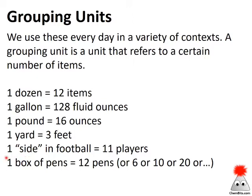We can extend it to other things. A side in football is 11 players — we don't talk about 11 players, we talk about the side in a football match. Or we can have a box of pens, and that's 12 pens. This is actually a good example because it points out that not all grouping units are as rigidly defined as a dozen, which is always 12. A box of pens might be 12, but it could be 6, 10, or 20 depending on the pens. Grouping units can be rigorously defined or more loosely defined.